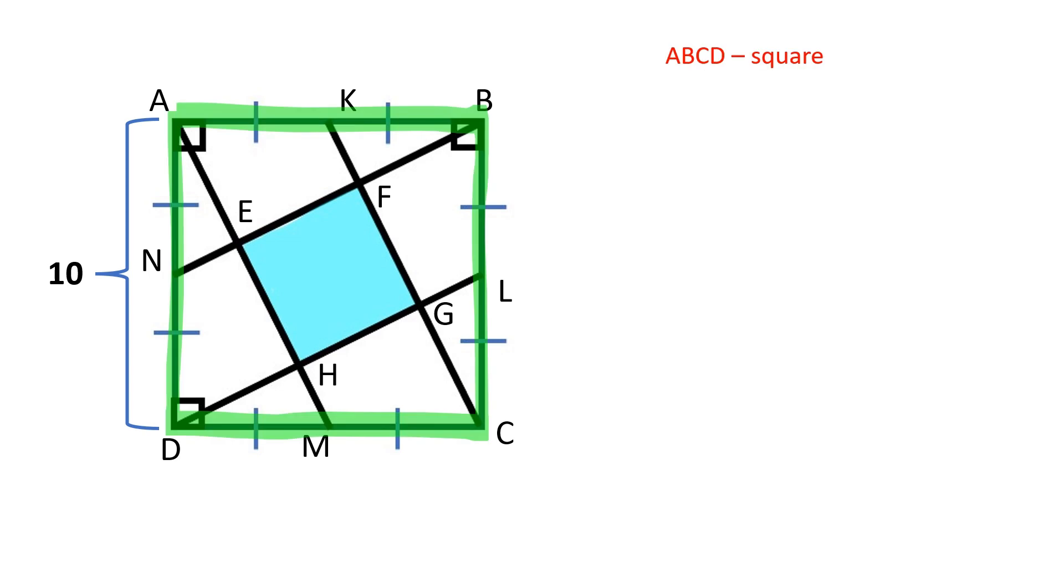ABCD is a square. The area of ABCD is equal to 100 square units. Let's extend the segment FK.